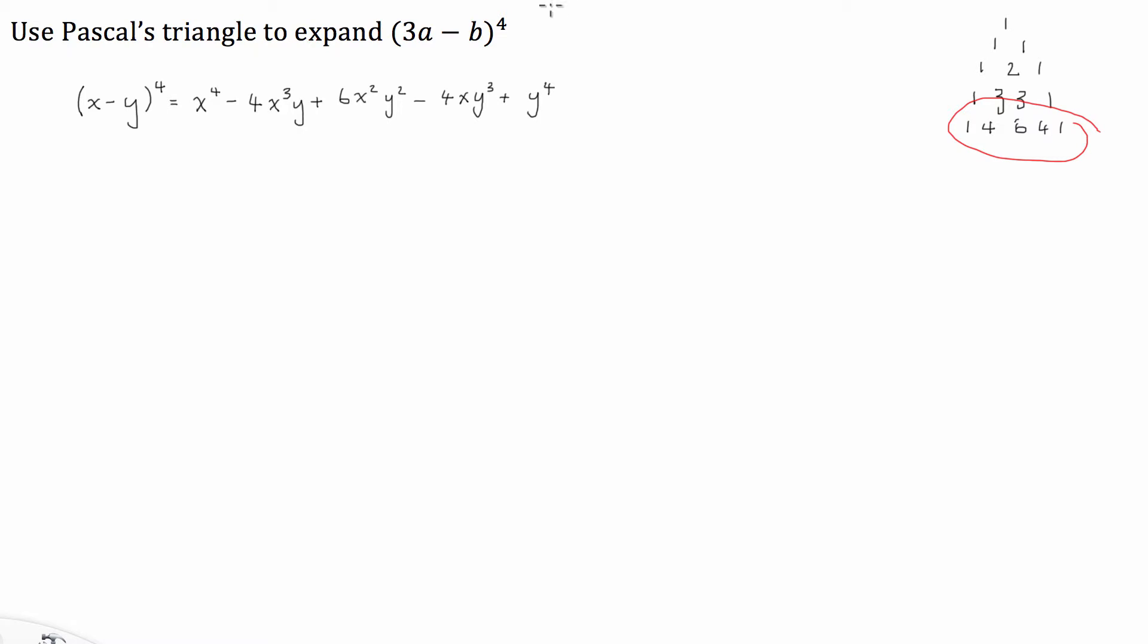Okay, so what we have here is this is going to be our expansion of x minus y all to the power of 4. So we have x is equal to 3a and y is equal to b.